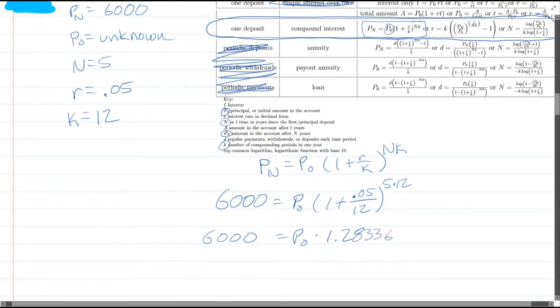So I want to get P0, so I have to divide by this right here. So we're going to divide both sides by 1.28336.